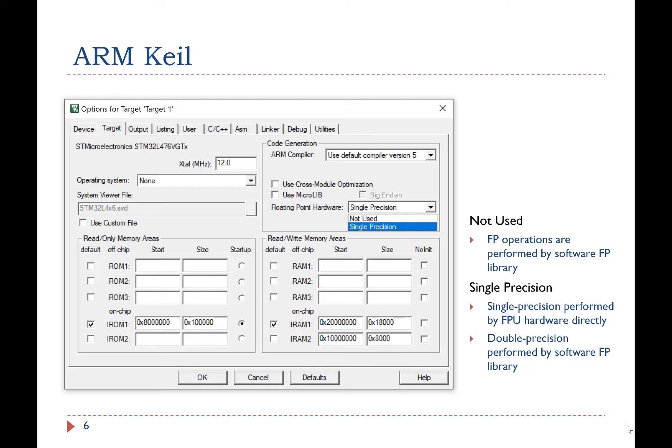To ask the compiler to generate an executable that uses FPU, in the target setting in Keil, we need to select single precision. For a GCC user, we need to type some special commands with options to activate the FPU.